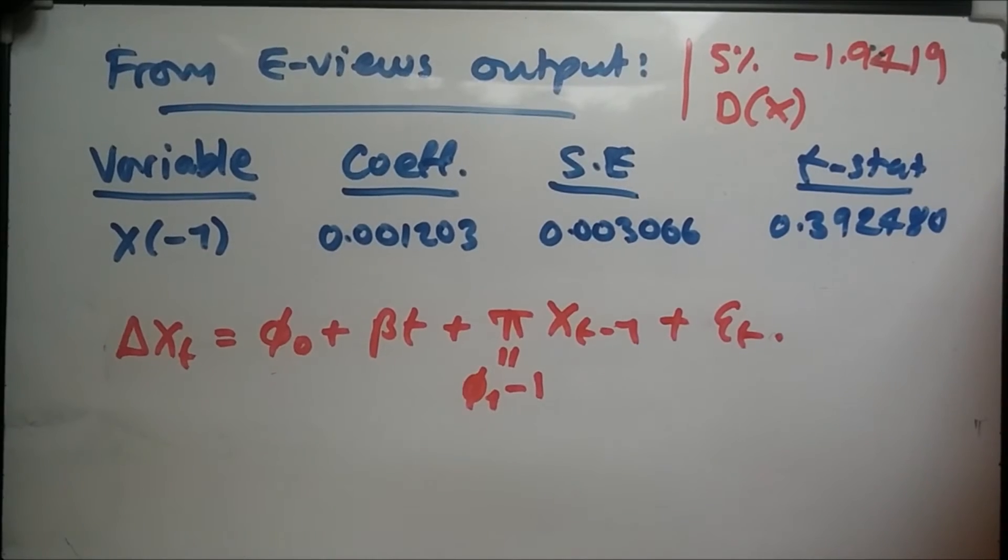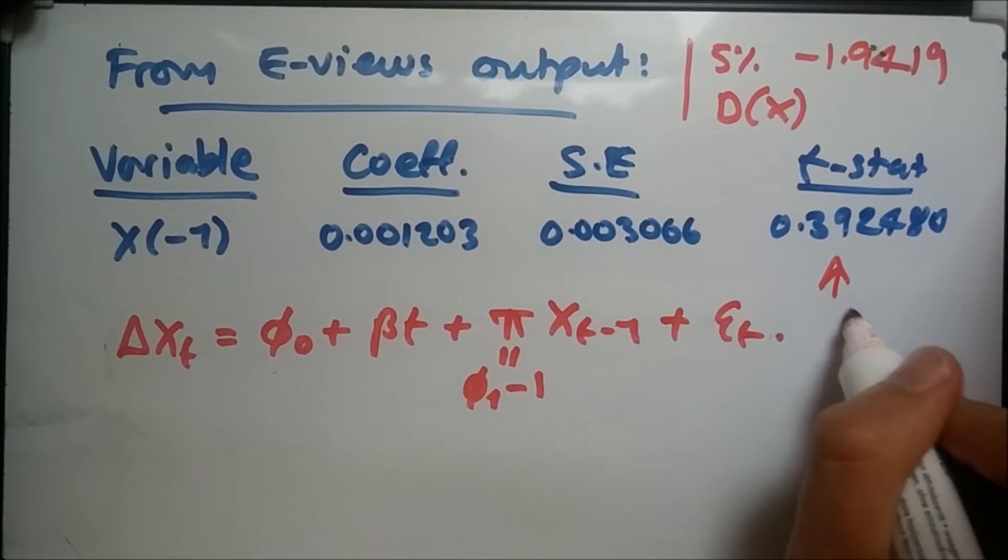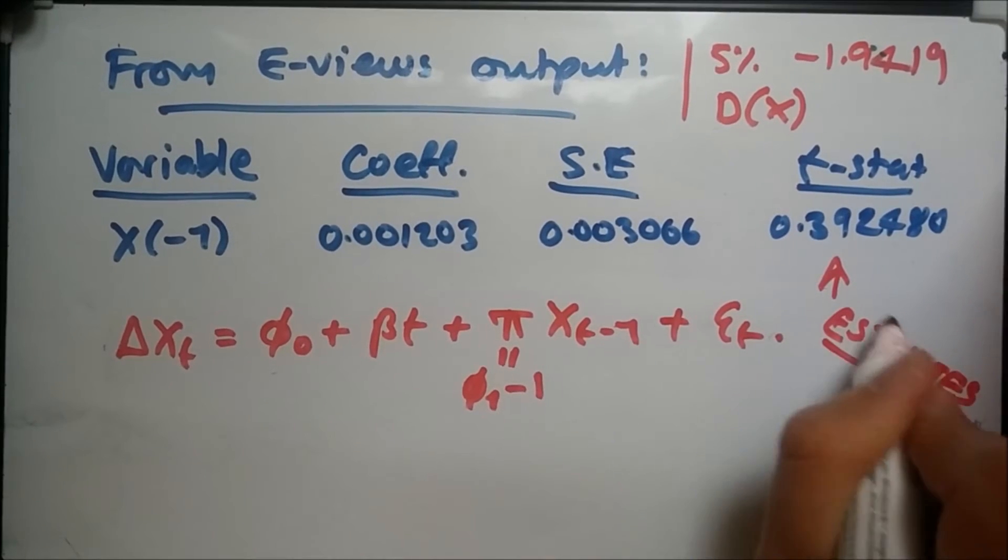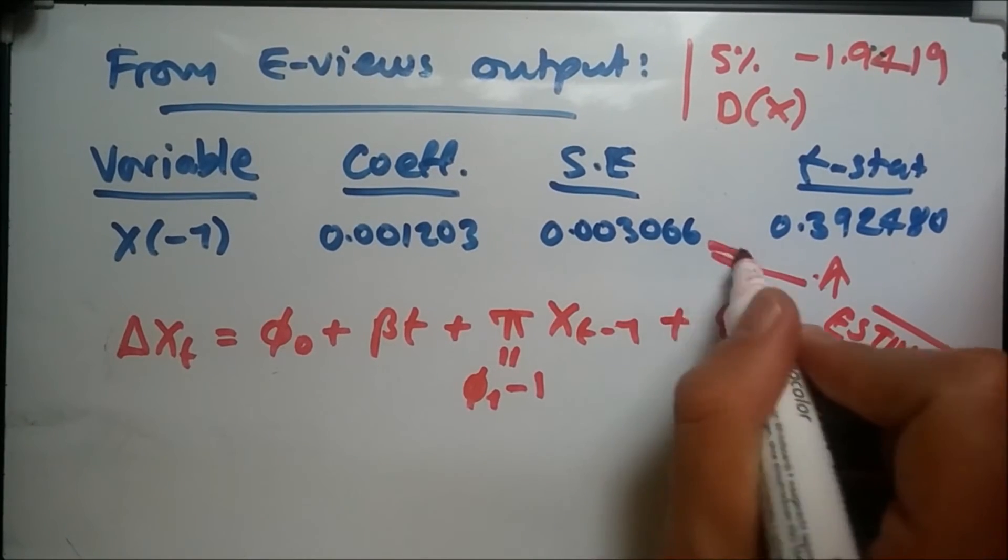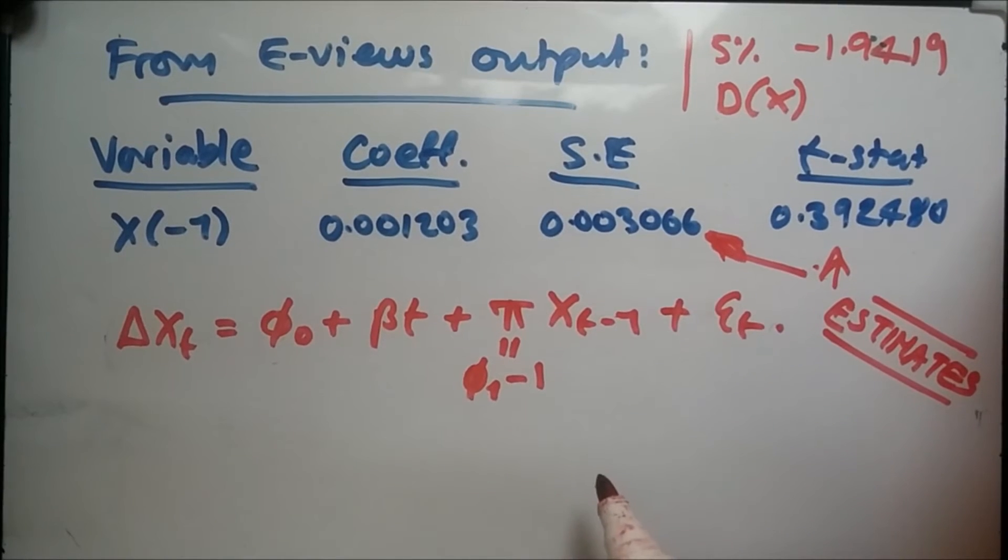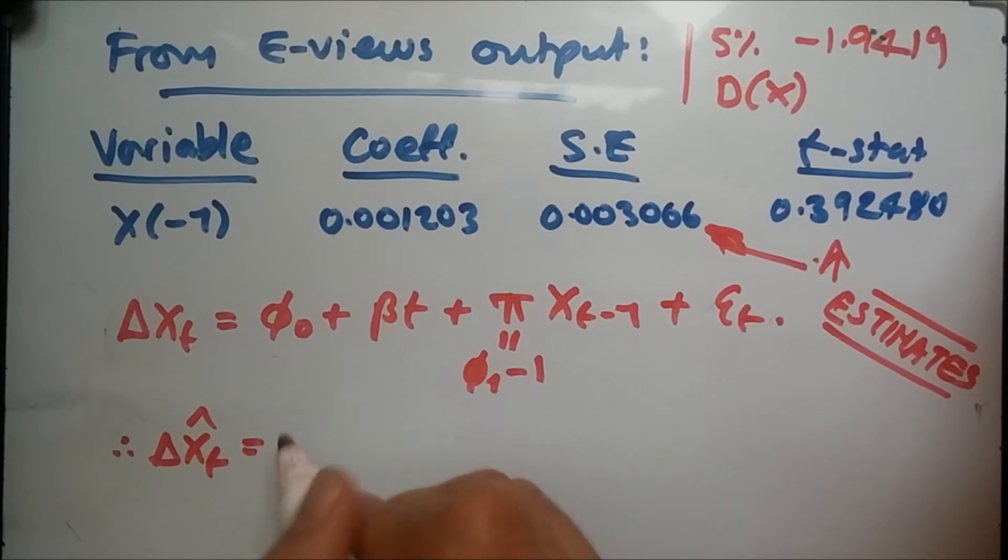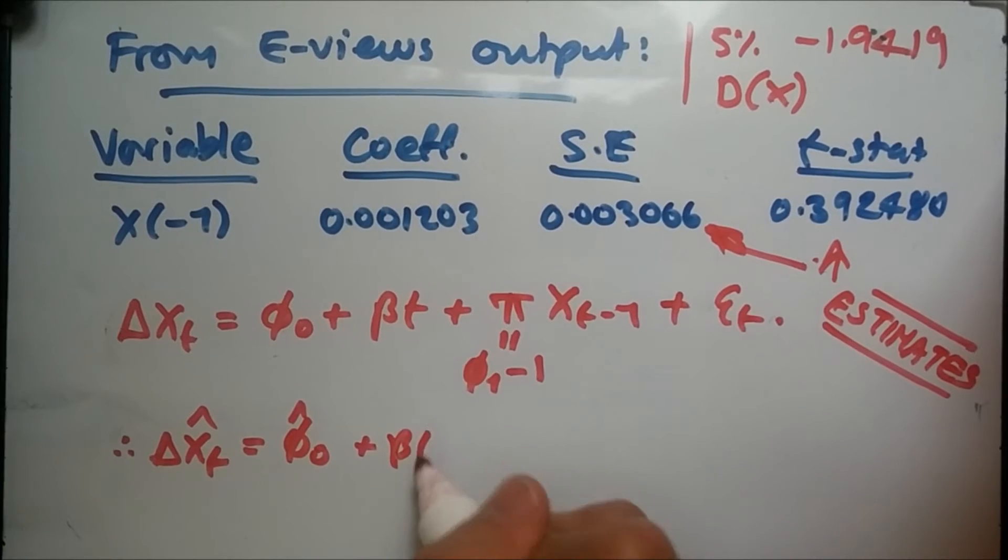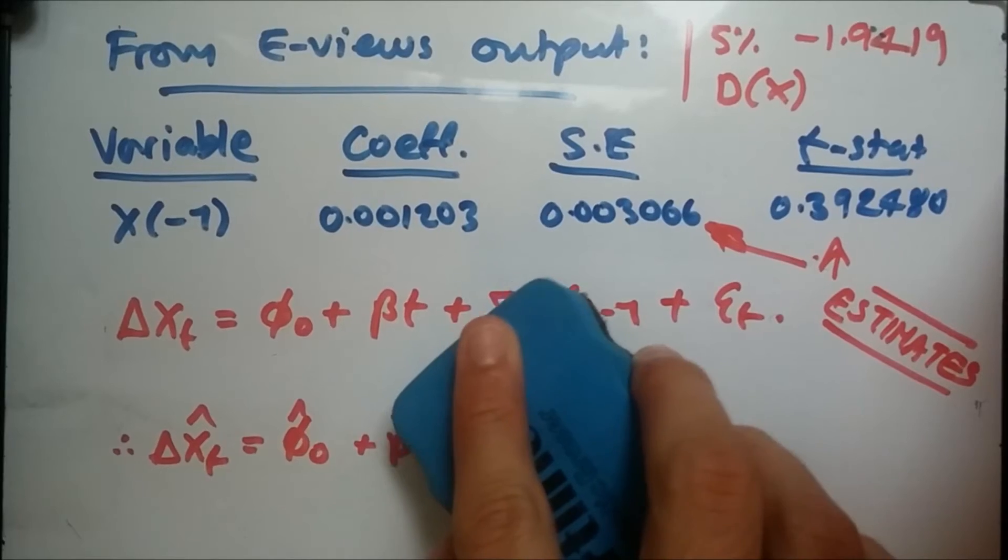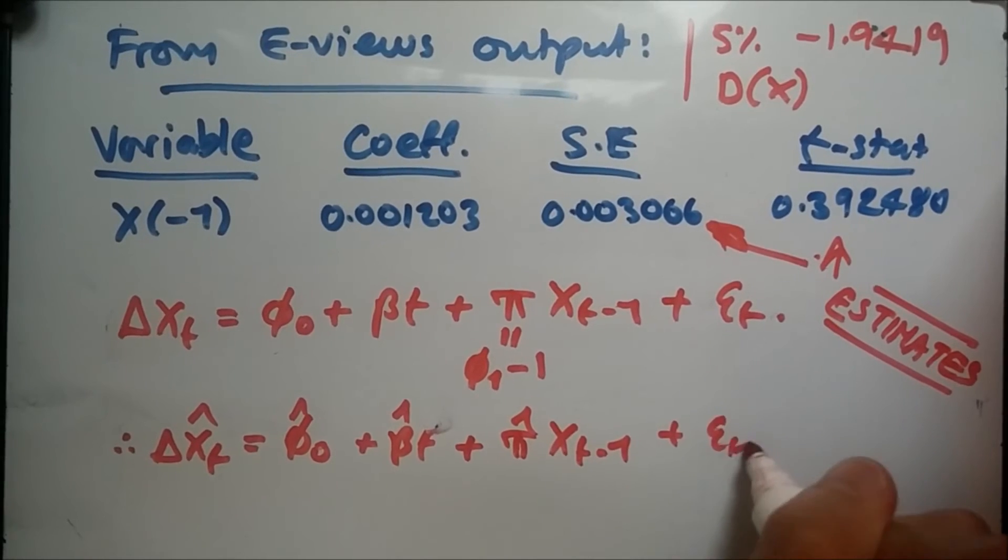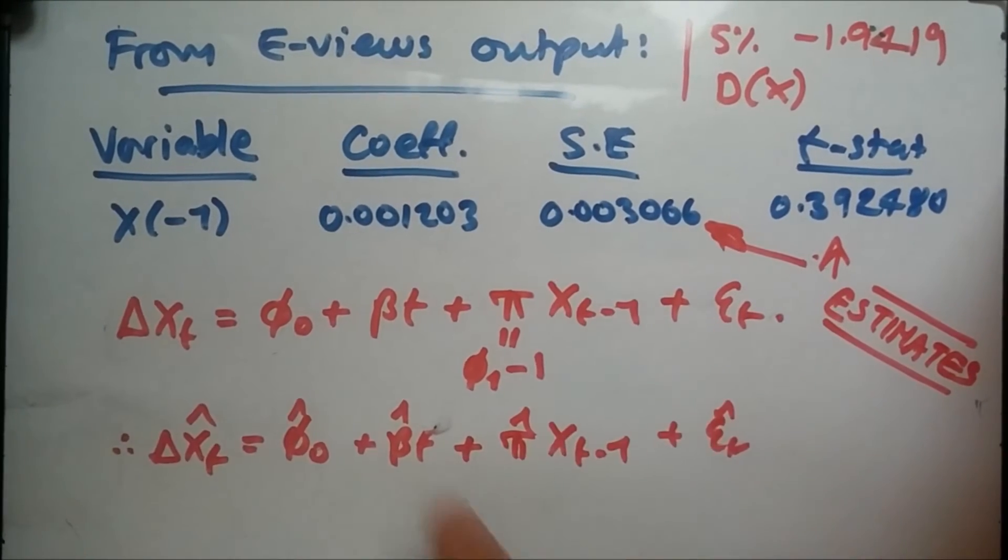Now as we're estimating this expression, notice that when you copy values from the output, the output is only estimates. Don't think these are the true values - they're just really good estimates, all of them, not just the t-stat. When we define estimates we have to put hats on every single guy. So this means delta X_t with a hat - the hat represents the estimate - phi_0 hat plus beta t hat, hat for this guy not t, t is the trend, plus pi hat X_t minus 1 plus epsilon_t hat.